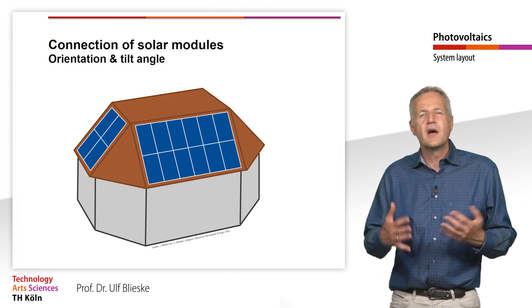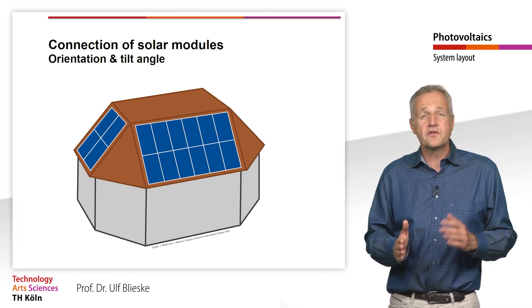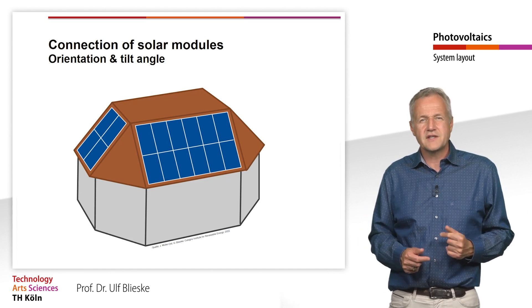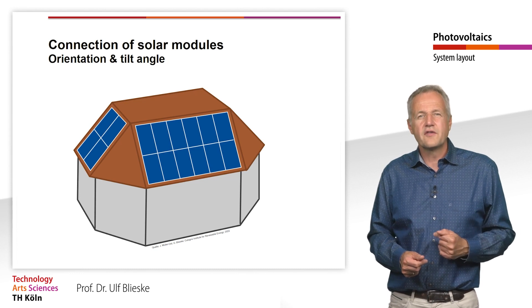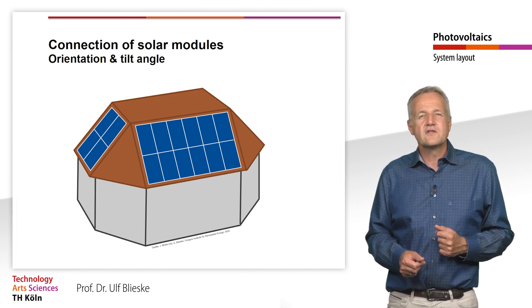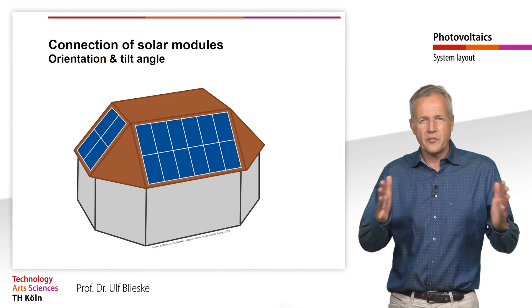As an example, let's look at a system in which differently oriented roof surfaces are covered with modules. Due to the different irradiation on the roof surface, the modules deliver a different current. To avoid power losses, the modules of the two roof surfaces should not be connected in a common string.